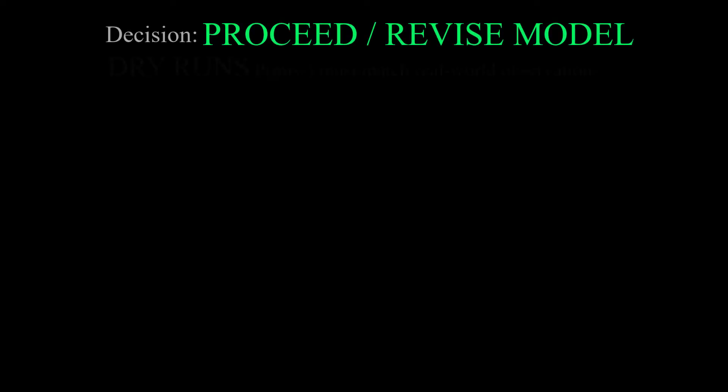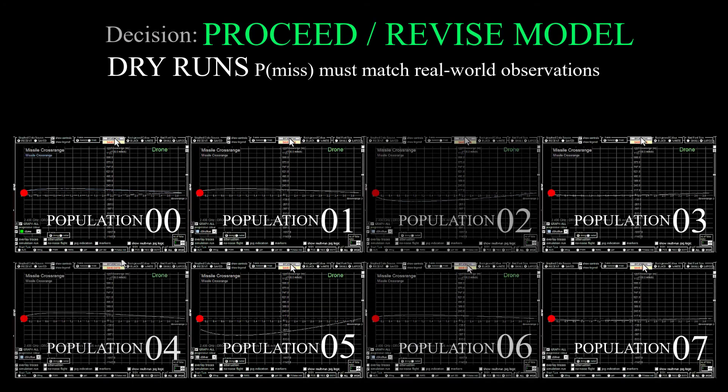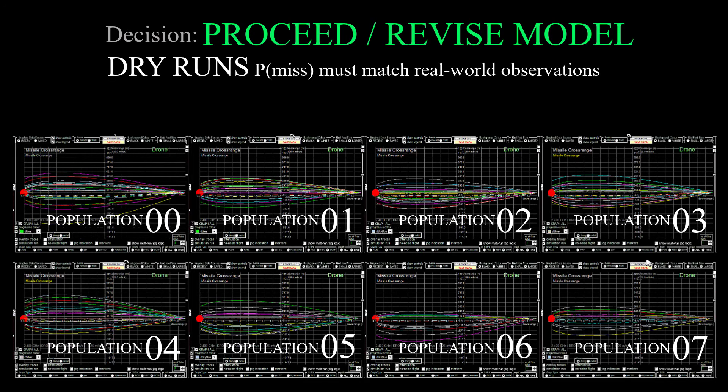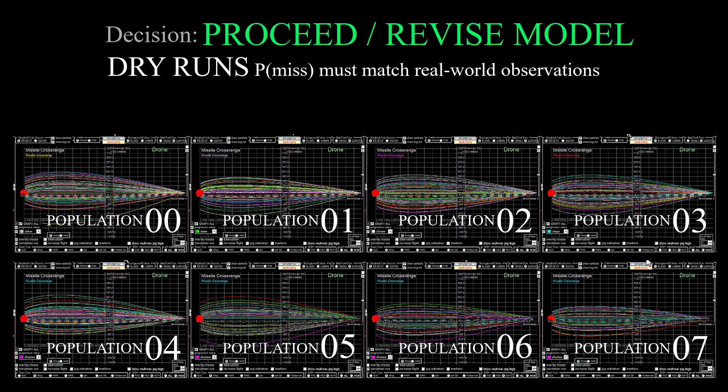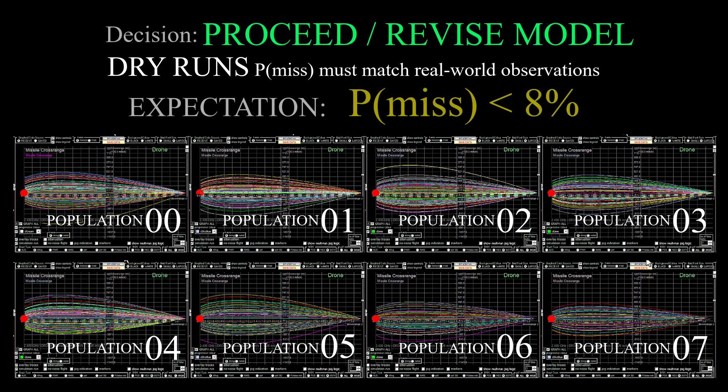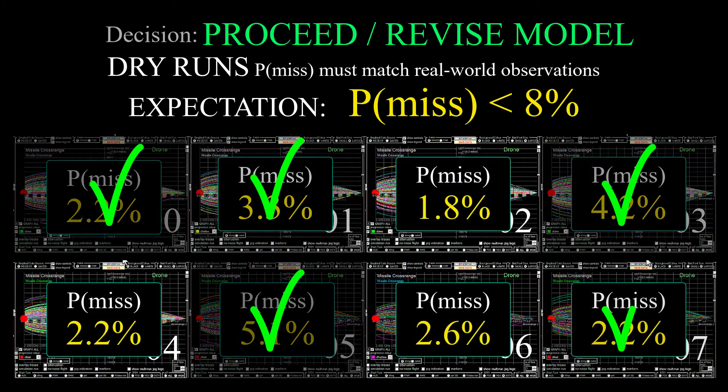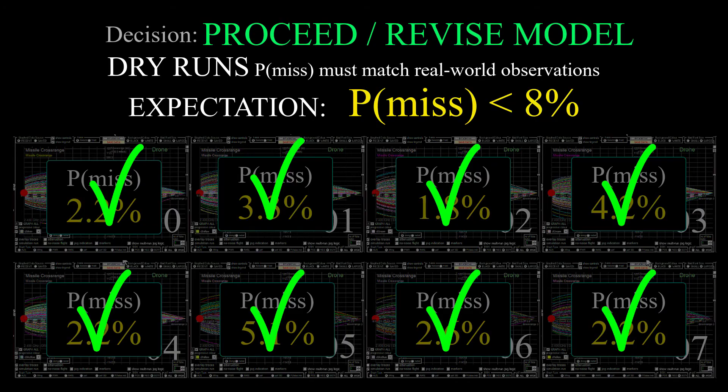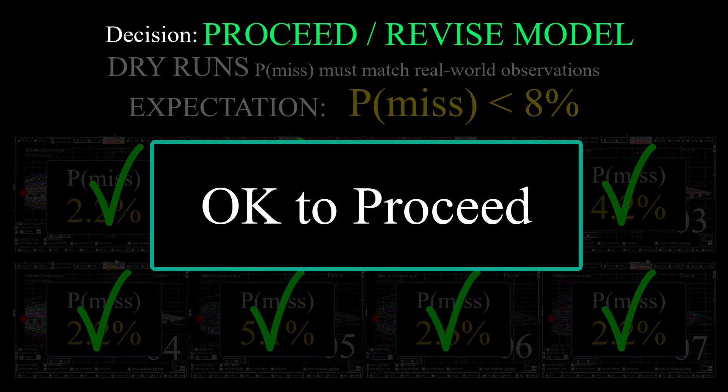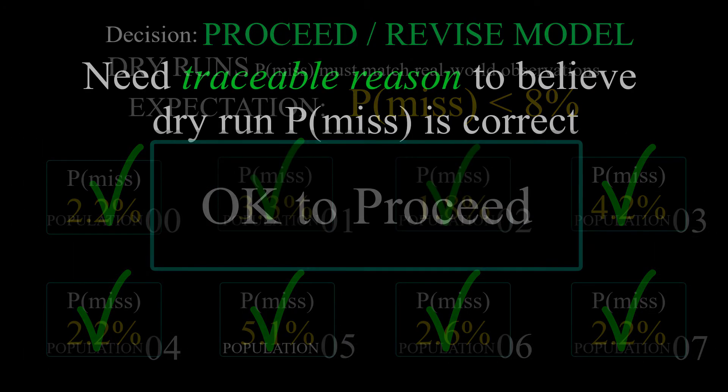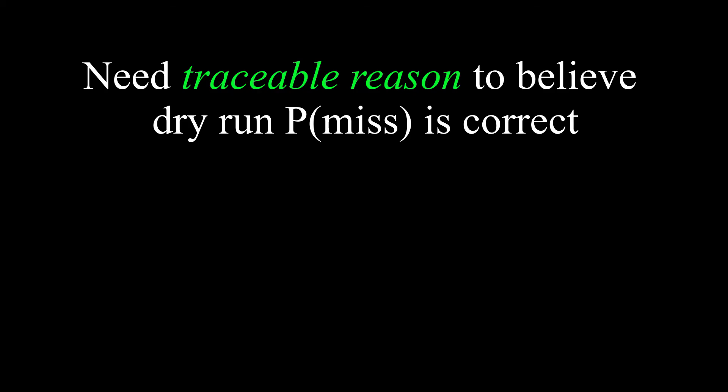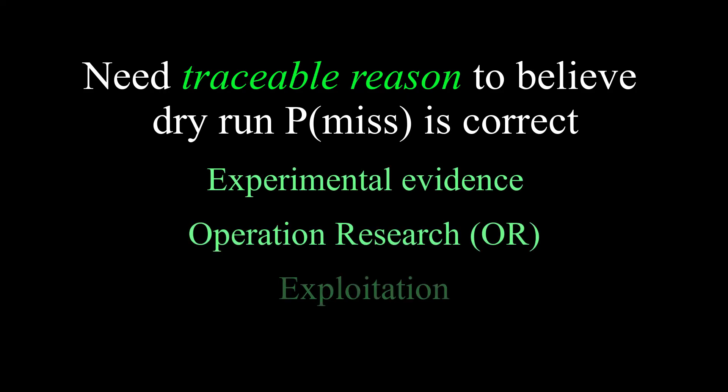Now, based on these results for the dry run populations, all eight of them, decide if the probability of a drone success is likely to represent real world attacks. And remember that the real world probability of success is not 100%. Not every drone is going to succeed. And substantiation for the decision to proceed could be provided by an experiment or could be provided by operations research methods.